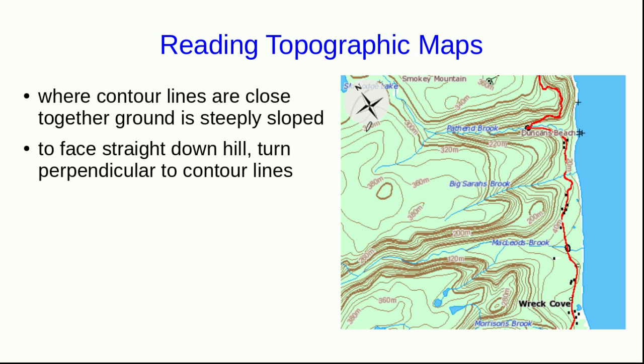Also note that we cannot draw every contour line on a topographic map. The map would just be covered in ink and wouldn't be useful. So the makers of this map have chosen to use 20-meter increments. You can see, for example, the 340-meter line and the 360-meter line. We could guess that the 350-meter line runs perhaps something like this about halfway between them.